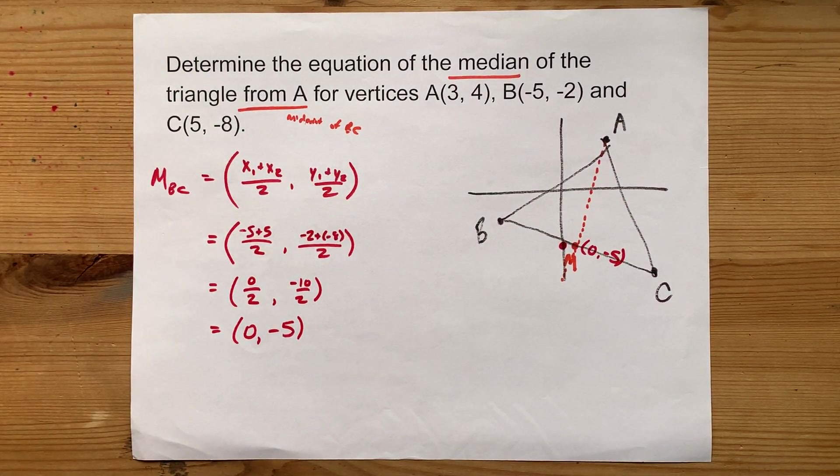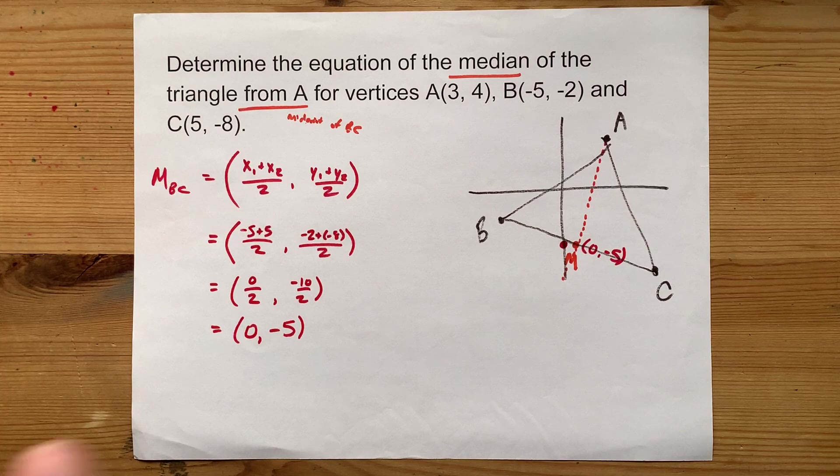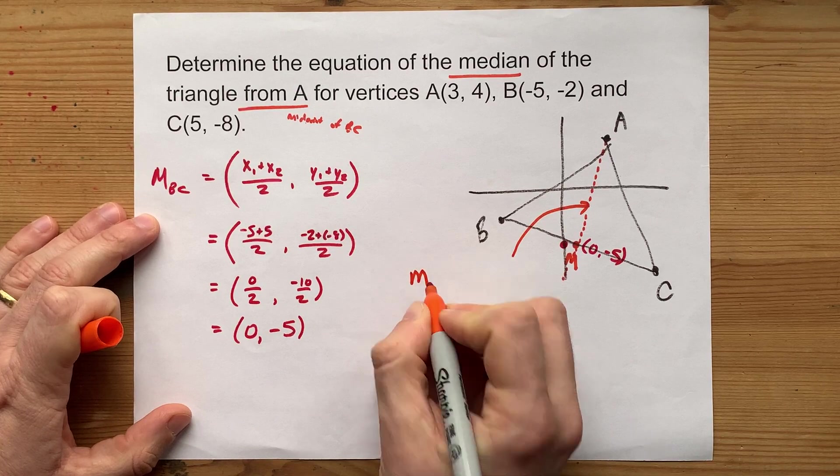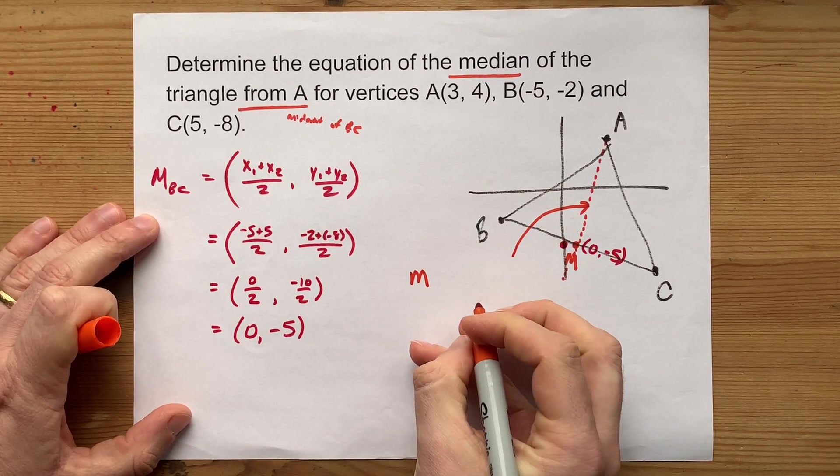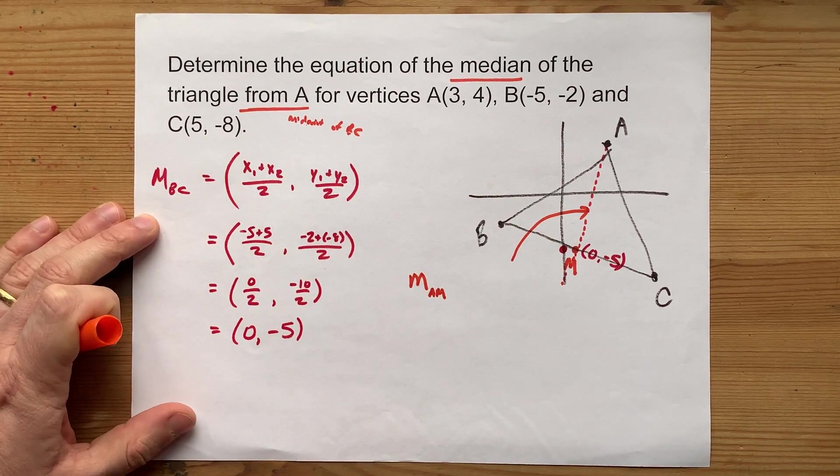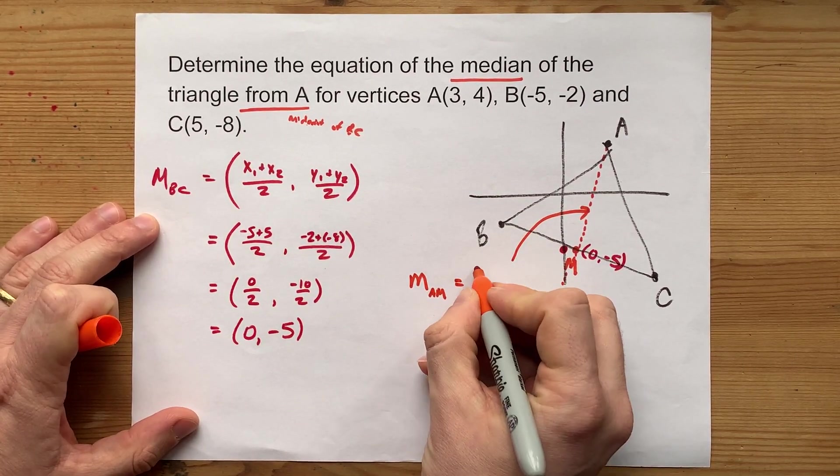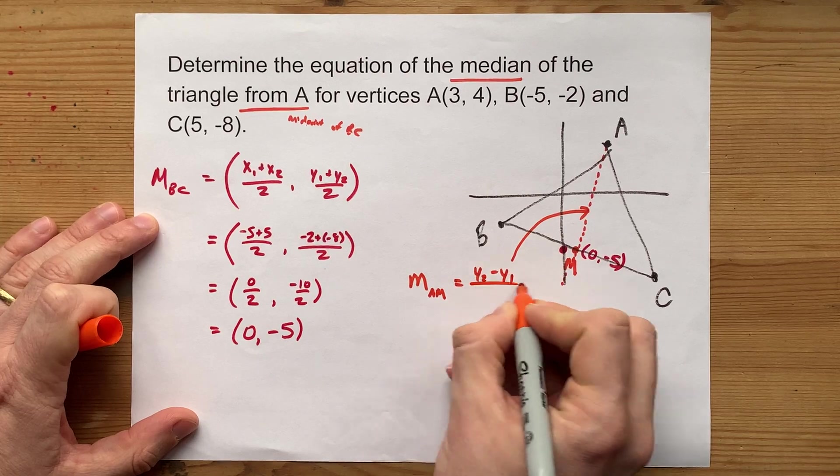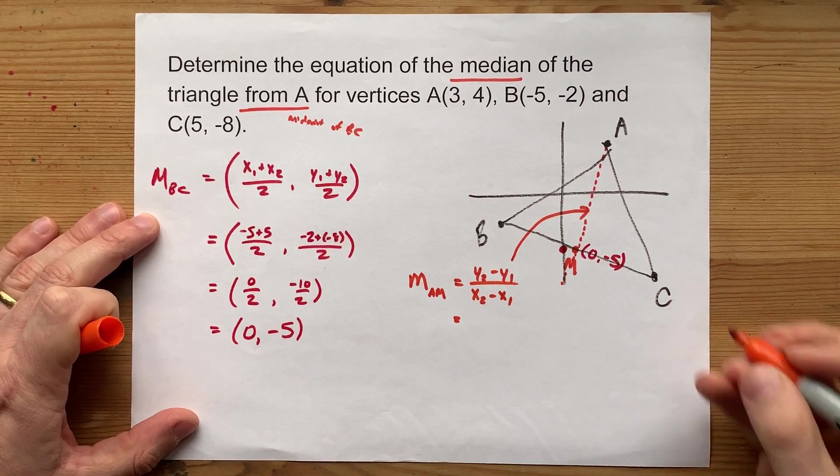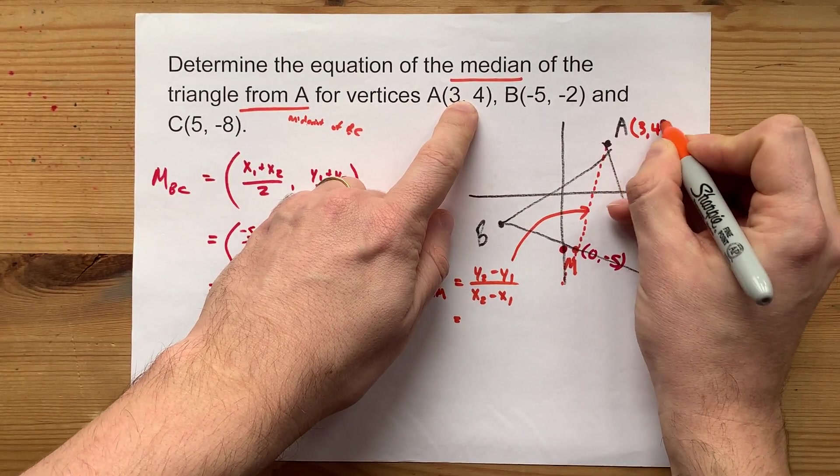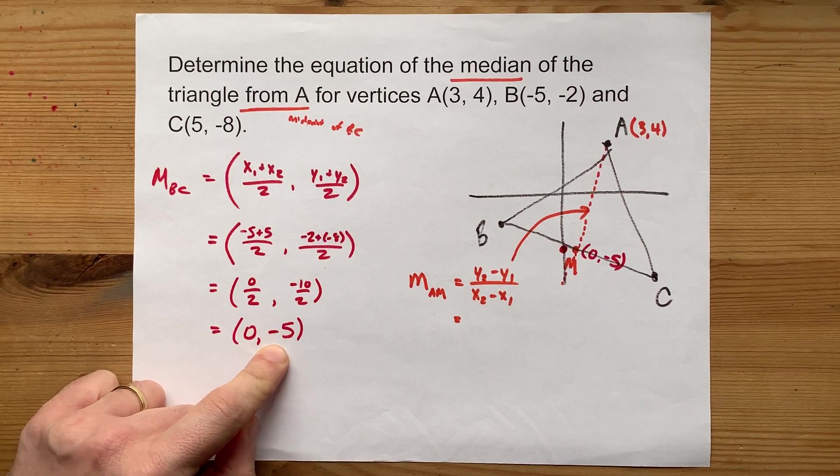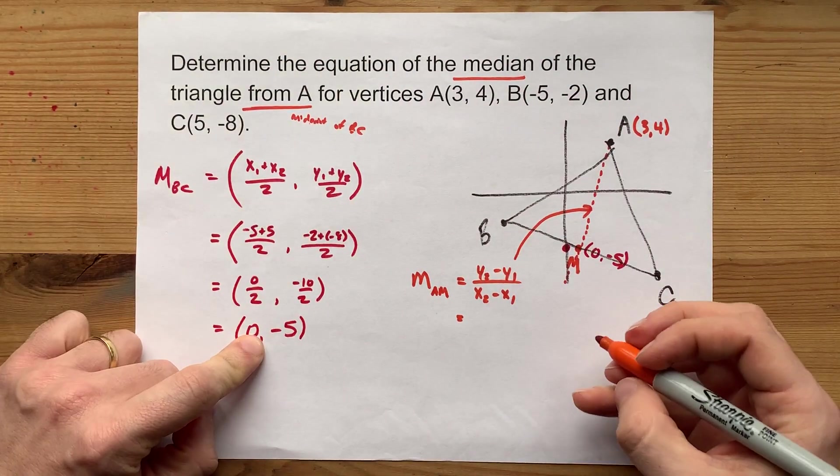But to get the equation of the median, you're actually going to need the slope of that line. That's the slope. That's a lowercase m between points A and capital M, capital M being midpoint. The formula for slope is y2 minus y1 over x2 minus x1. Now here, I am using the point 3 comma 4 as well as 0 comma negative 5. Just be careful you're using the correct points there.